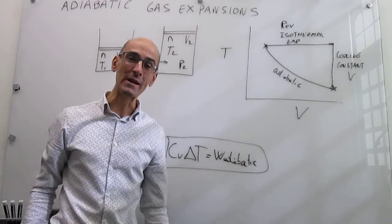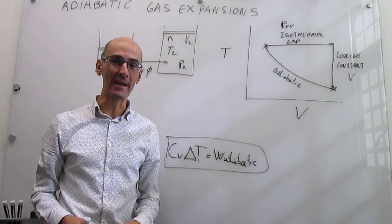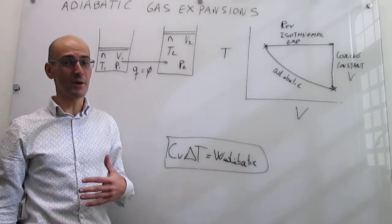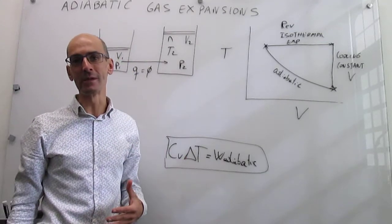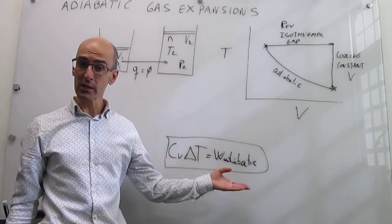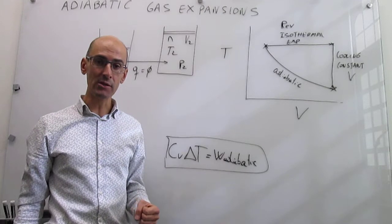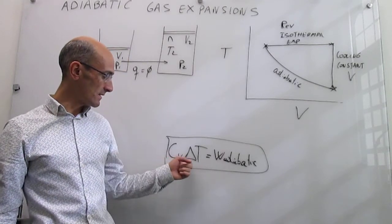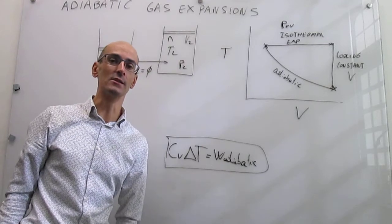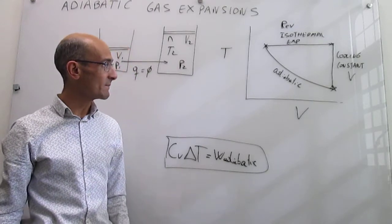In the last video, we have seen the foundations for adiabatic gas expansions, and we have defined them as processes in which there's no energy transfer as heat. Following along, we've been able to derive a relationship between the work that the gas is doing in the expansion and the internal energy change, which emerges because the gas is losing energy as it expands.